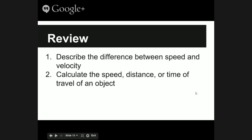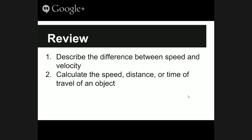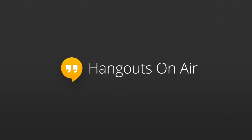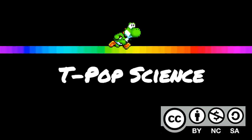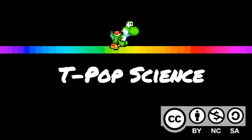To review, we covered two things in this video. First, describing the difference between speed and velocity. Second, calculating speed, distance, or time of travel of an object — you should be able to find any one of those three things using the formula triangle. Thanks for sticking with me through the video. Hopefully you learned some things. See you tomorrow — have a good one!